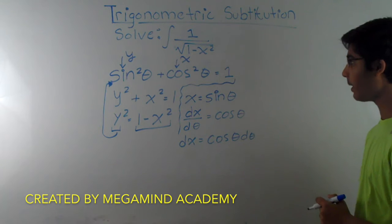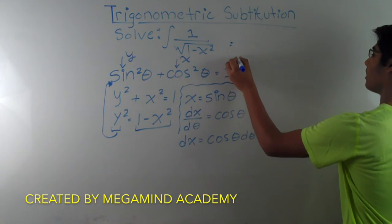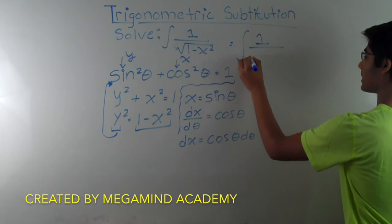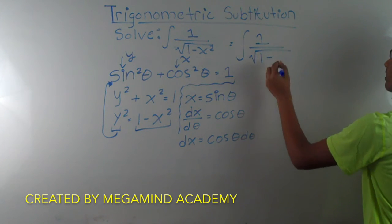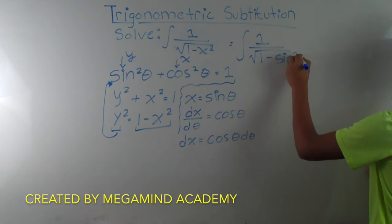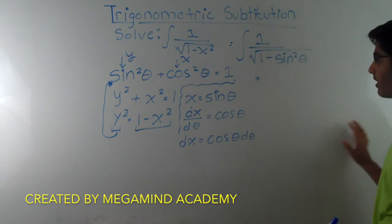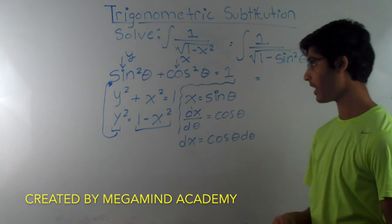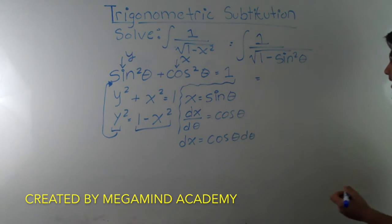So now what do we do? We have to plug in the values that we know. When we plug in the values, we get the integral of 1 over the square root of 1 minus sine squared of theta. According to the Pythagorean identity, 1 minus sine squared of theta means we subtract sine squared of theta from both sides, leaving cosine squared of theta isolated. So that means this radicand is equal to cosine squared of theta.